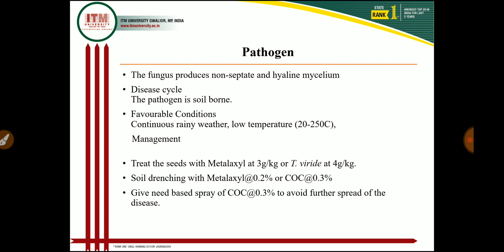Phytophthora produces non-septate hyaline mycelium because it is a lower fungus. Sporangiophores emerge through stomata on the lower surface of the leaf, singly or in groups, and are unbranched. Single-celled, hyaline, round or oval sporangia are borne singly; these sporangia germinate to produce abundant zoospores. The fungus also produces oospores and chlamydospores in adverse conditions; these serve as dormant spores and germinate when favorable conditions return to infect the new castor crop.